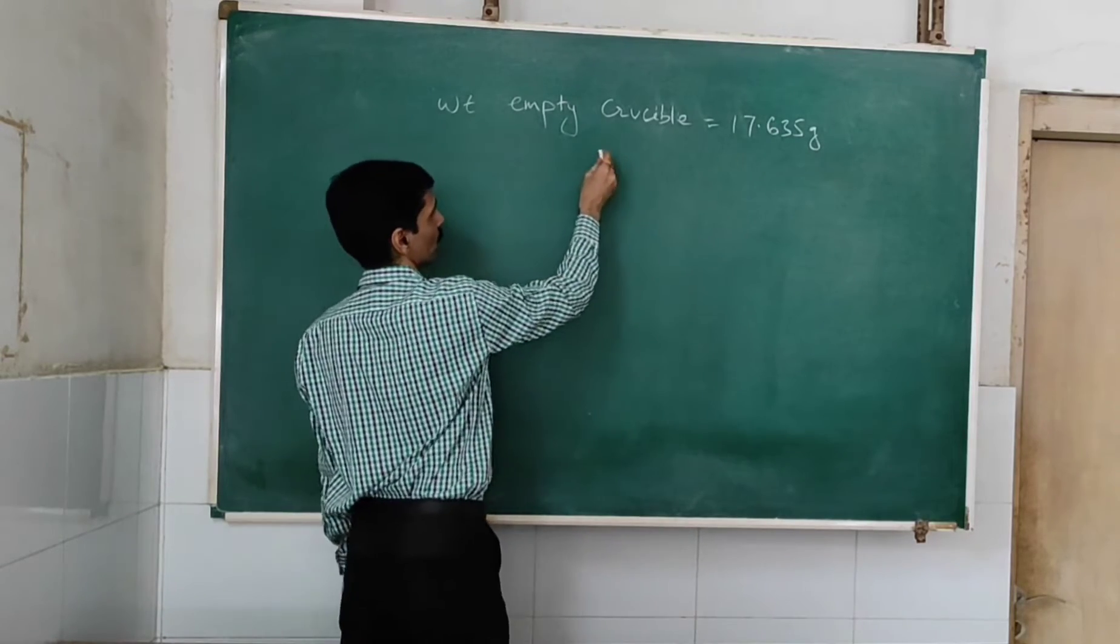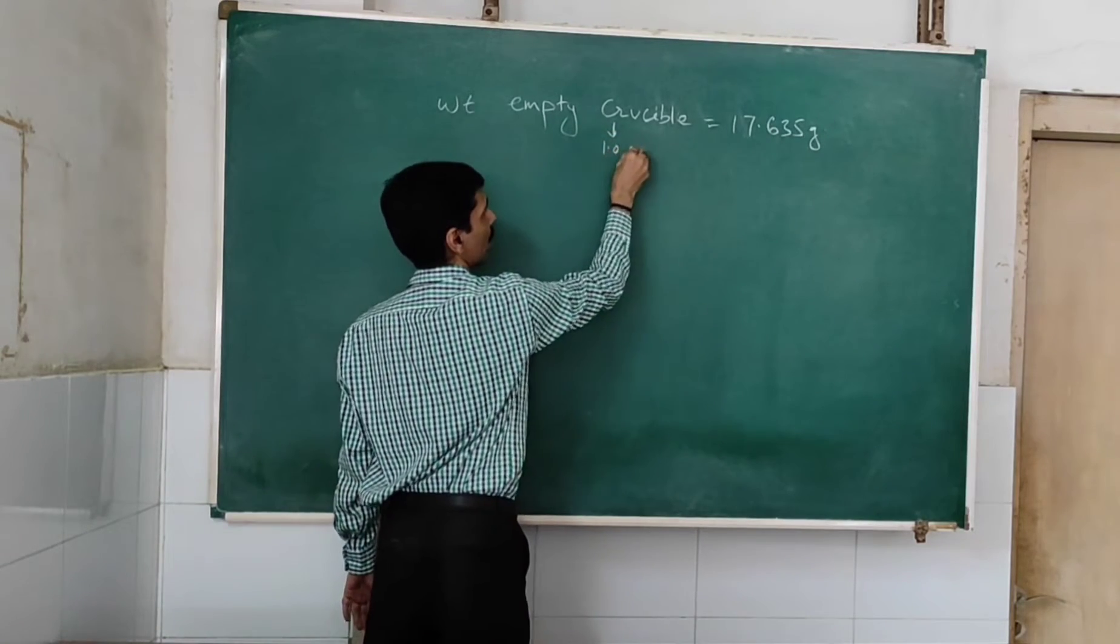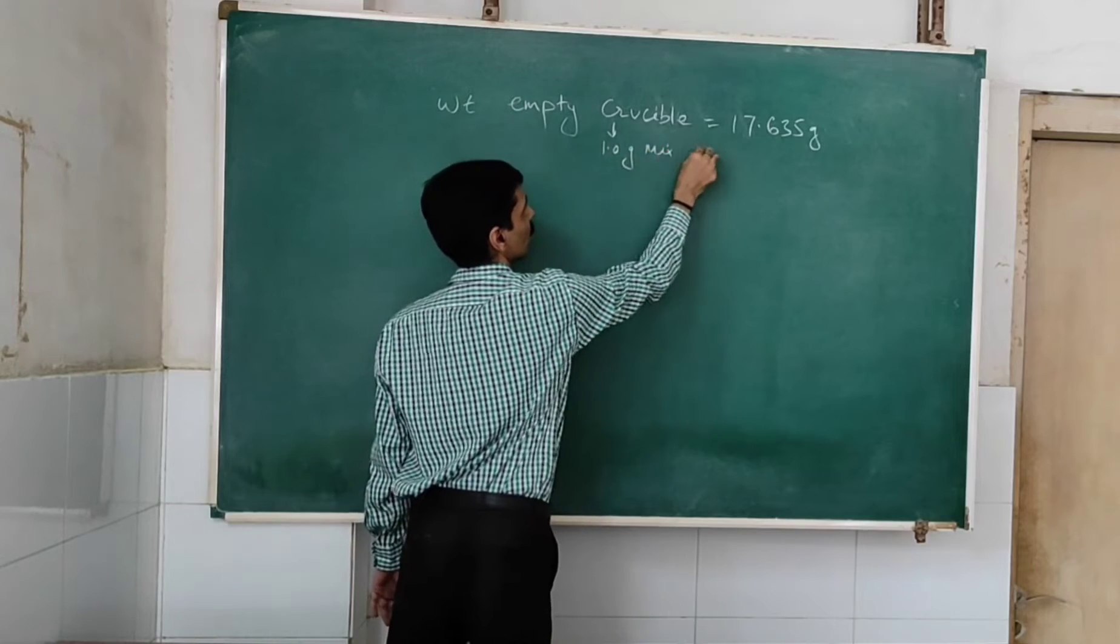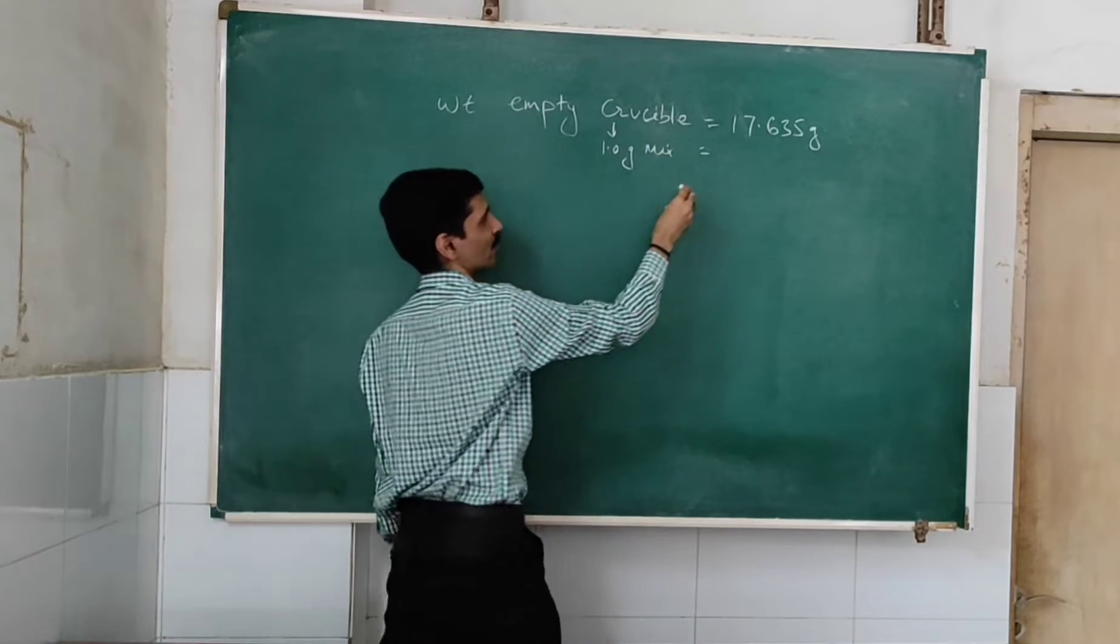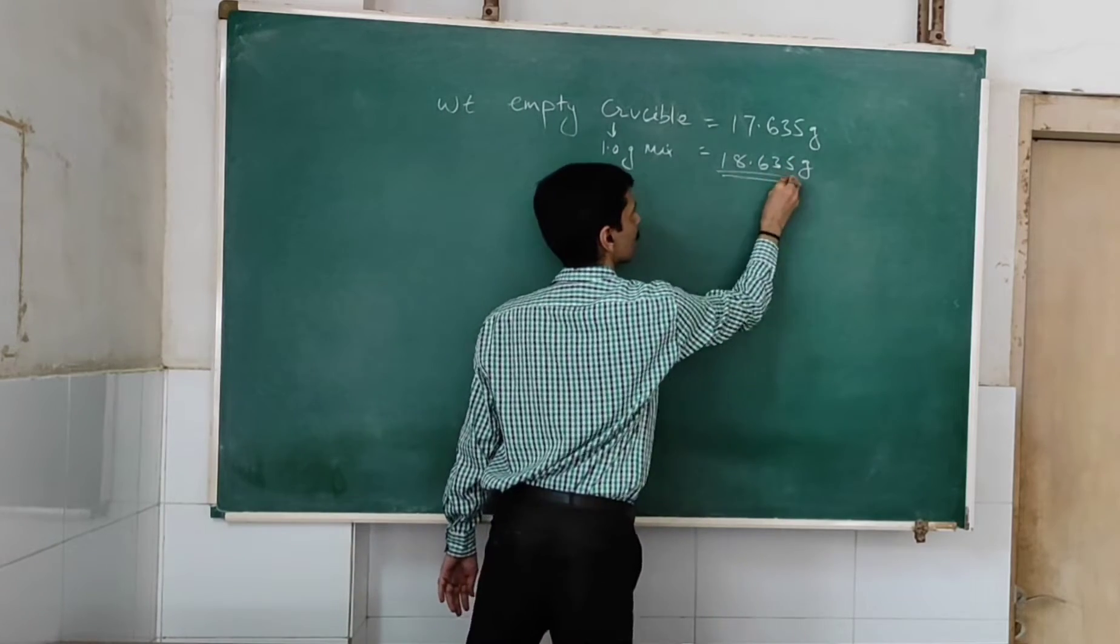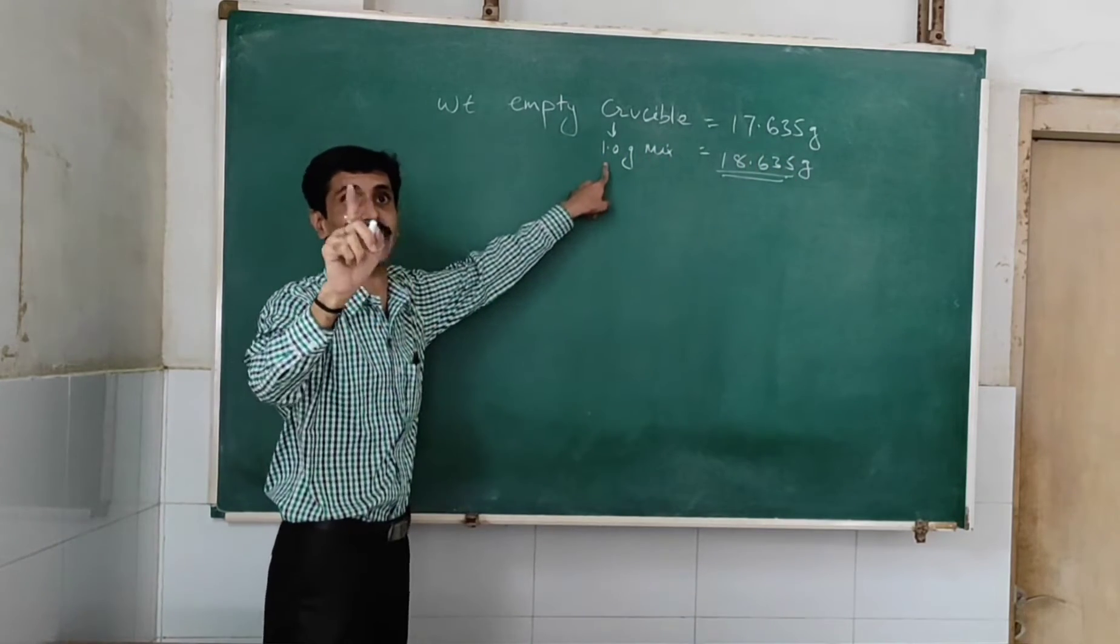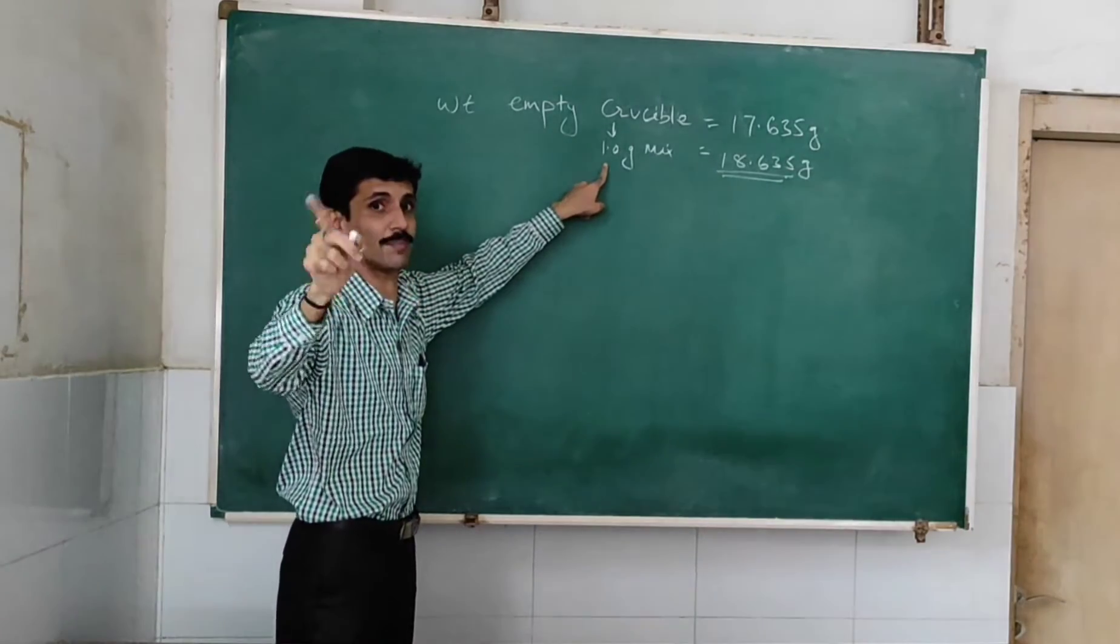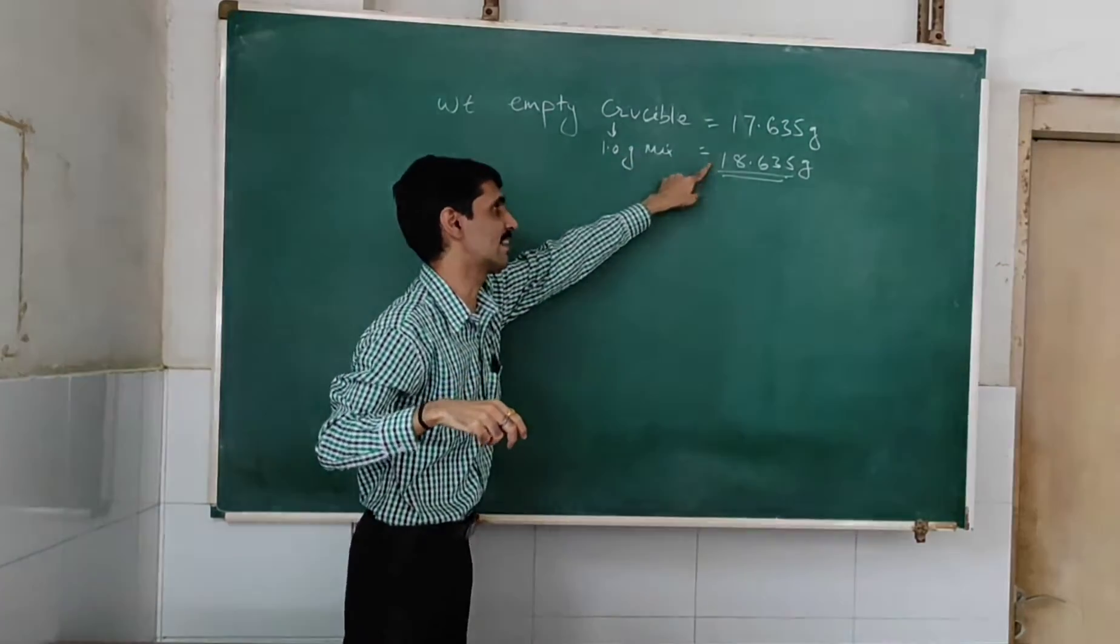Next is, we add to the empty crucible one gram of the mixture. So therefore, crucible plus mixture becomes 18.635 grams. Now we are heating not the empty crucible, but crucible along with the mixture. So that's why we are going to consider this weight.